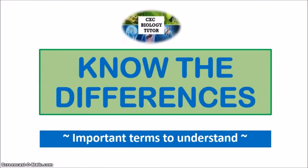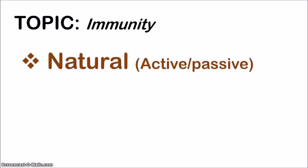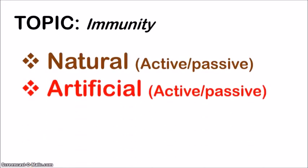Hey, it's Michelle, your CSC biology tutor again. Welcome back to the Know the Differences series, in which I go through important terms that you need to understand. In this final video, I'll be looking at immunity — the body's defense against pathogens. A pathogen is any foreign organism that can cause disease. We're going to look at the differences between natural and artificial immunity, and how these two types can either be actively or passively acquired.